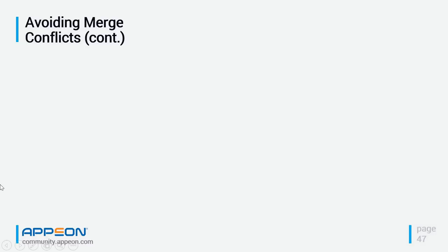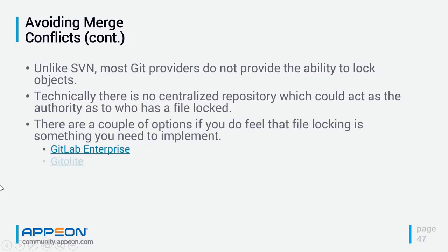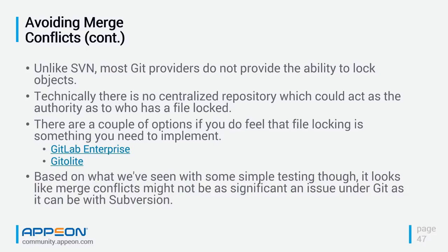There are some options for those who really need locking. GitLab Enterprise — the paid version of the open source GitLab — does implement file locking. There's also a product called Gitalite, which sits as an interface between your local development environment and the Git repository and adds a file locking layer. But based on what we've seen, merge conflicts don't appear to be nearly as significant with Git as with Subversion, so you may find you can run Git without any special locking solutions and not have a problem.